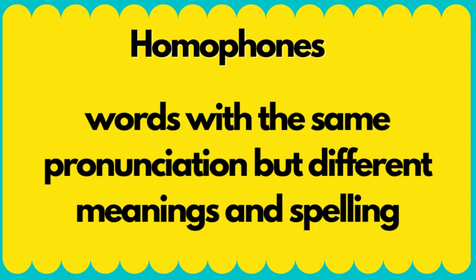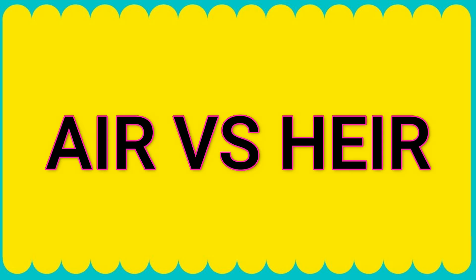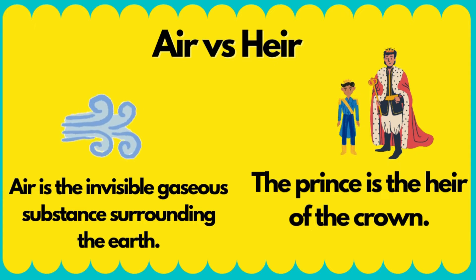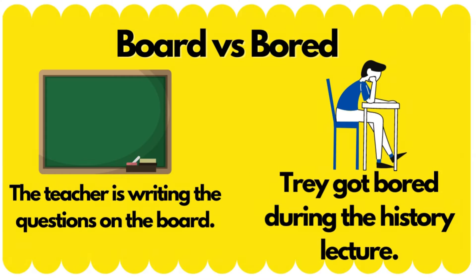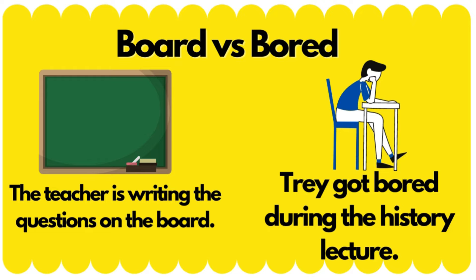Here are some examples. Air versus heir: 'Air' is the invisible gaseous substance surrounding the earth. 'Heir' — the prince is the heir of the crown. Board versus bored: the teacher is writing the questions on the board.